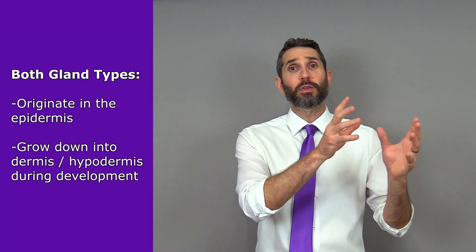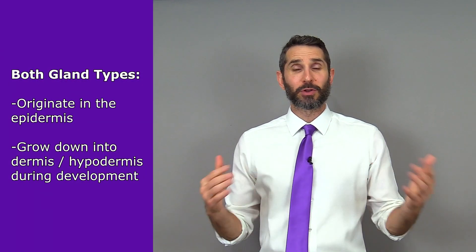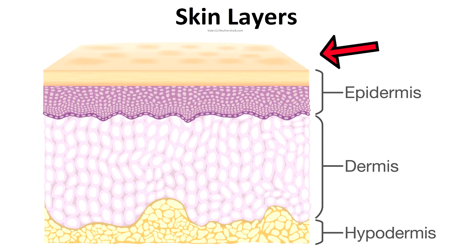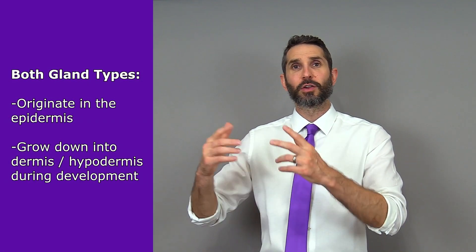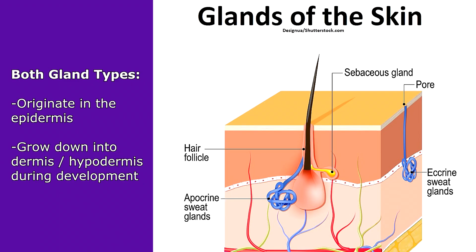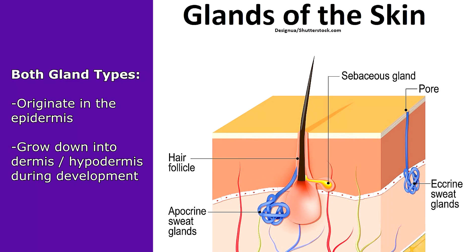Both of those glands originate in the epidermis, which is the outermost layer of the skin, but they grow and develop downward into the dermis and sometimes even the hypodermis during fetal development.